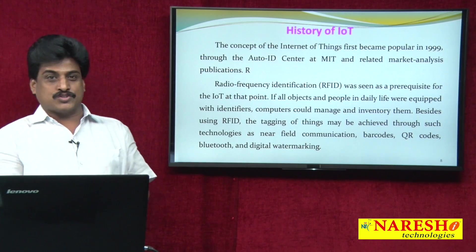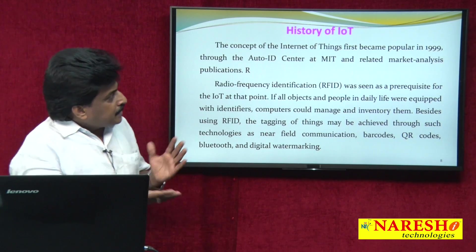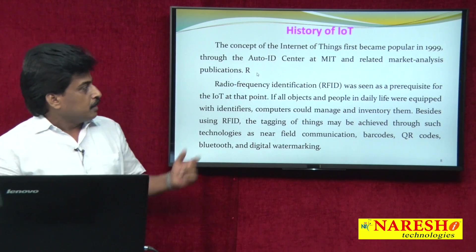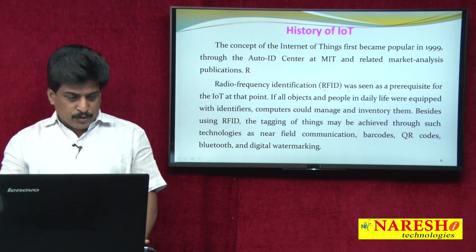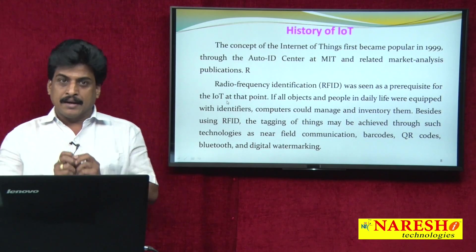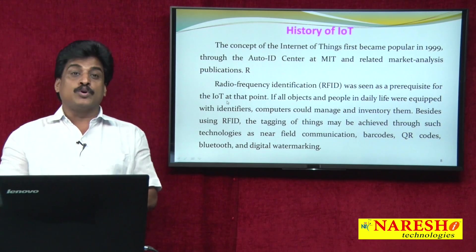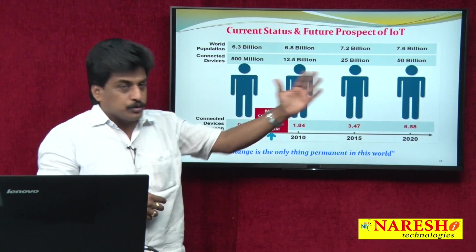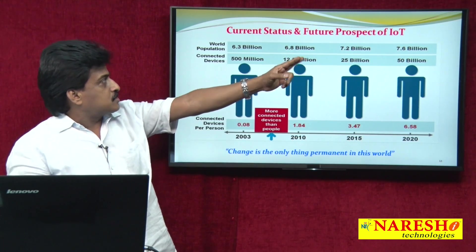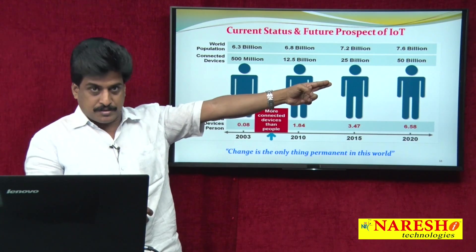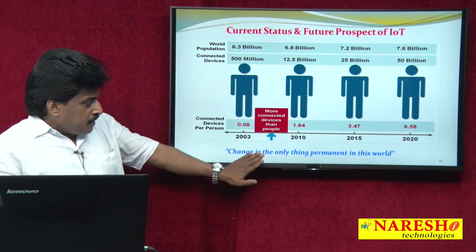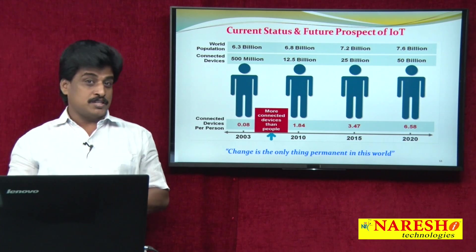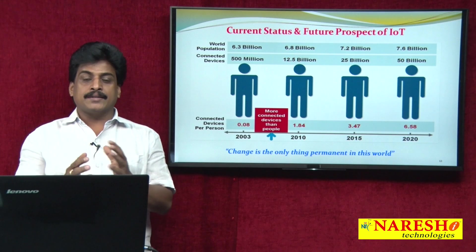The history of IoT: In 1999, through the Auto-ID Center at MIT and related market analysis publications, radio frequency identification (RFID) was seen as a prerequisite for IoT. So IoT was initialized in the 1990s. According to IoT growth graphs, by 2020, 50 billion devices were connected to the internet out of a world population of 7.6 billion. As a slogan: change is the only thing permanent in this world. This has been a pre-introduction to Internet of Things.